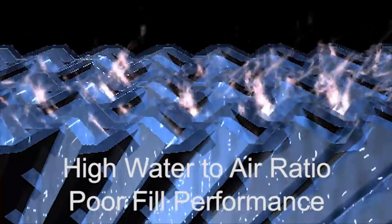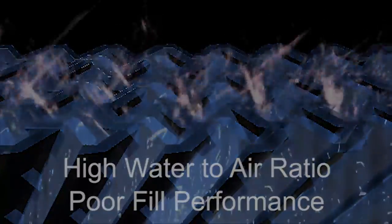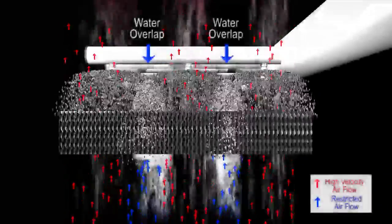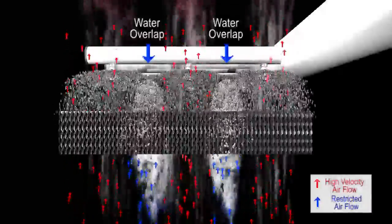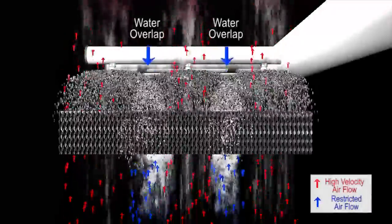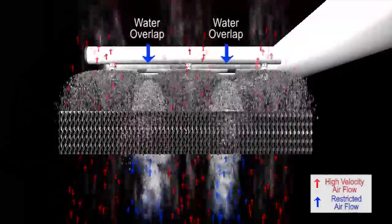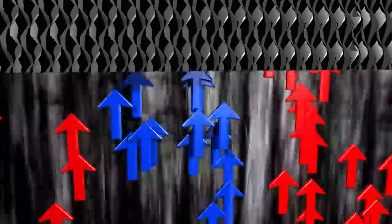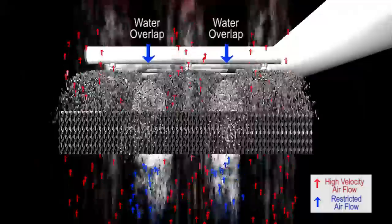So here is what happens when you overlap or flood the fill media. As you can see in the graphic, the water loading becomes heavy where the overlap occurs. This overlap creates a high-pressure drop, restricting airflow in these areas. The blue arrows depict the restriction to the airflow resulting from the high-pressure drop and the heavy water loading of the overlap.